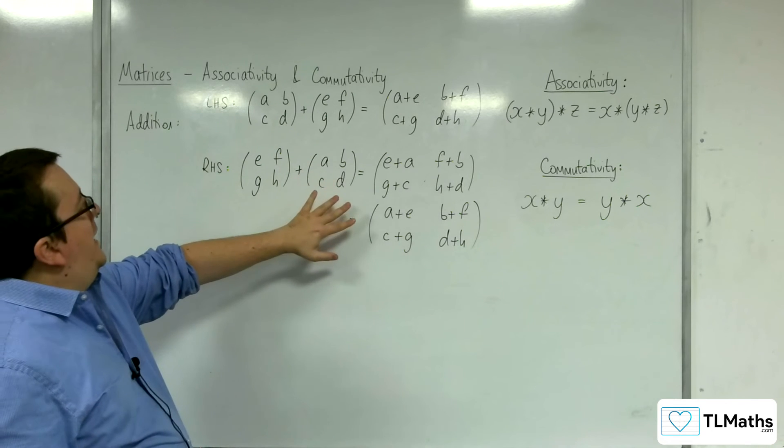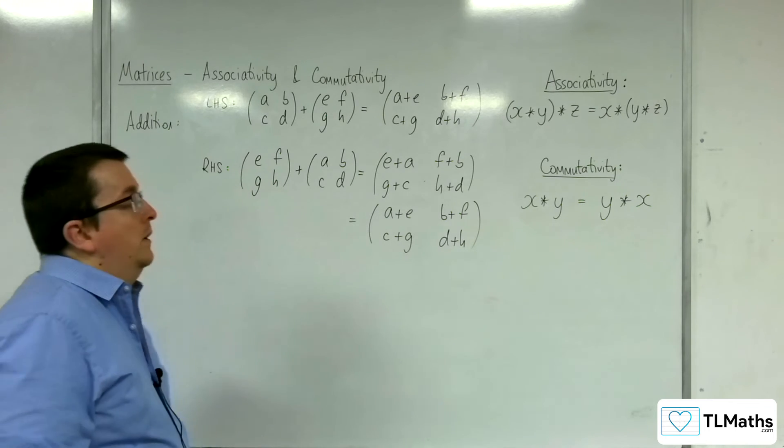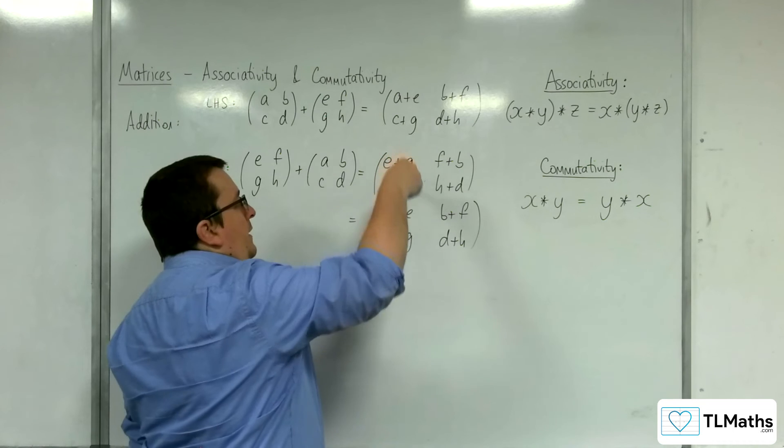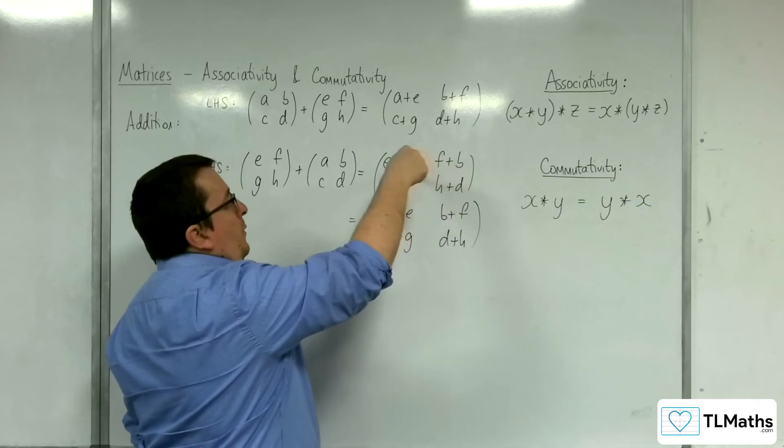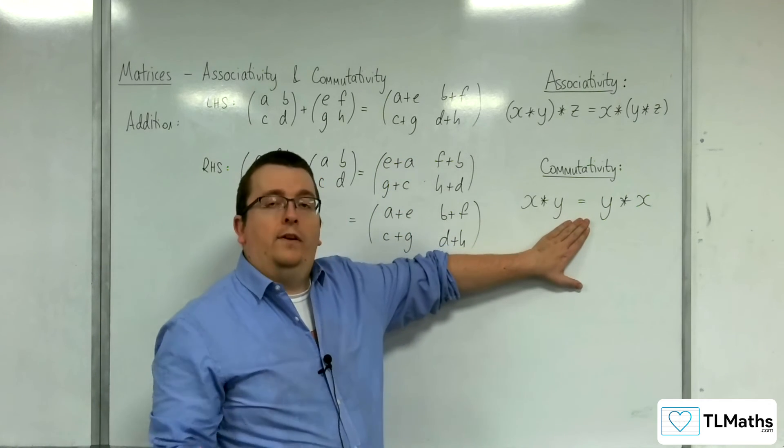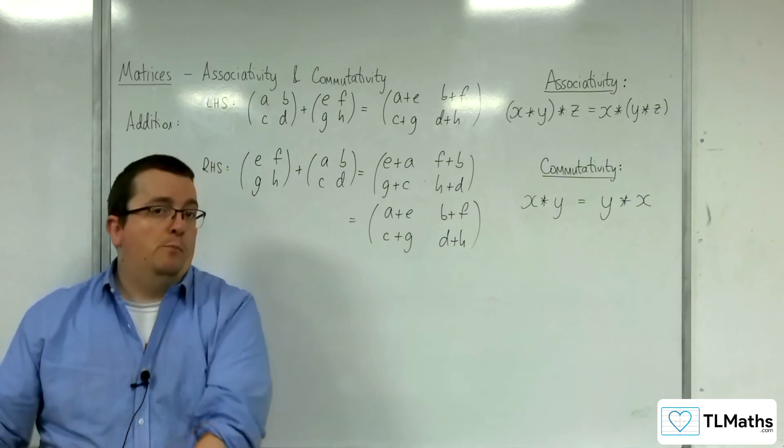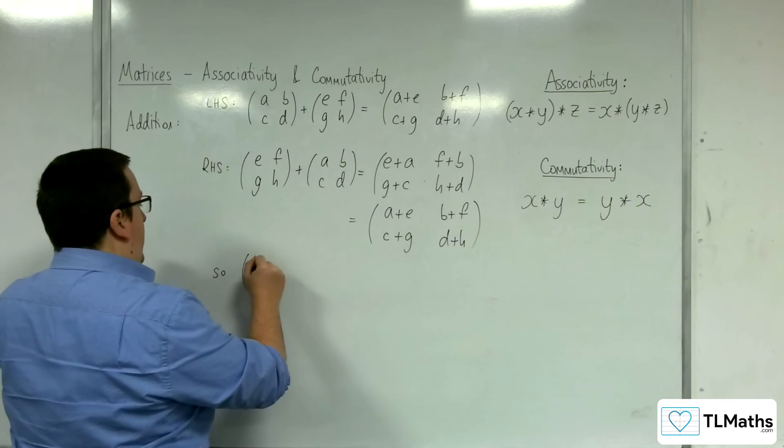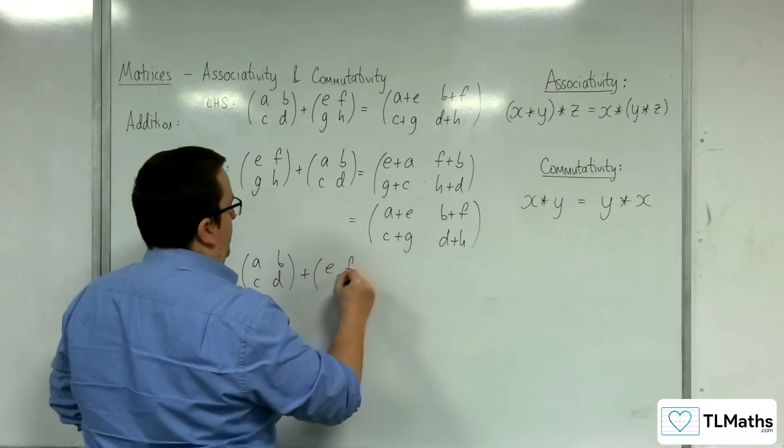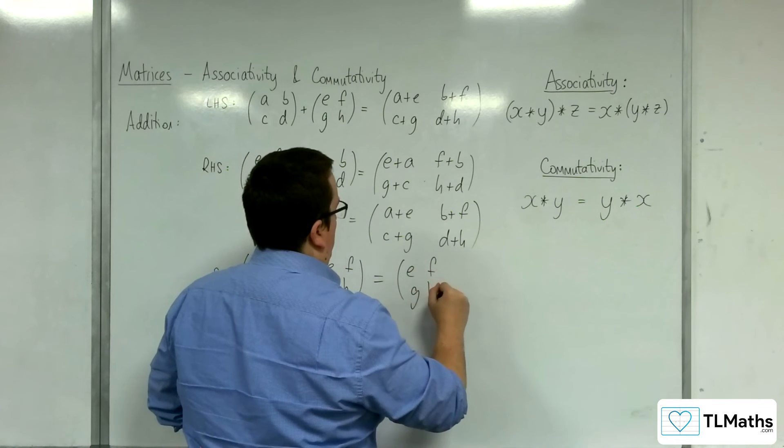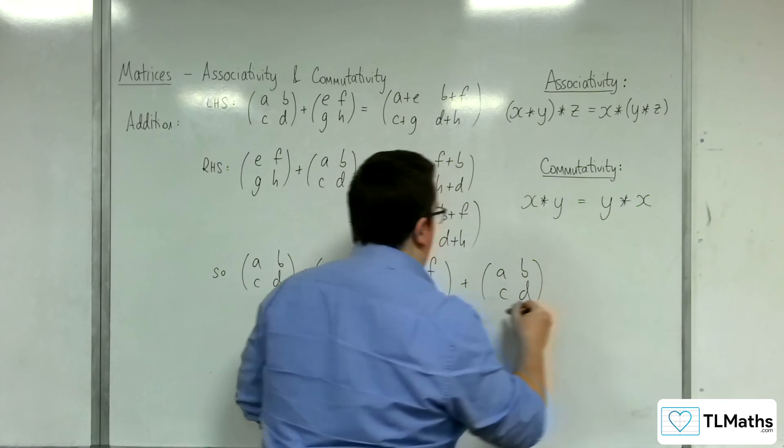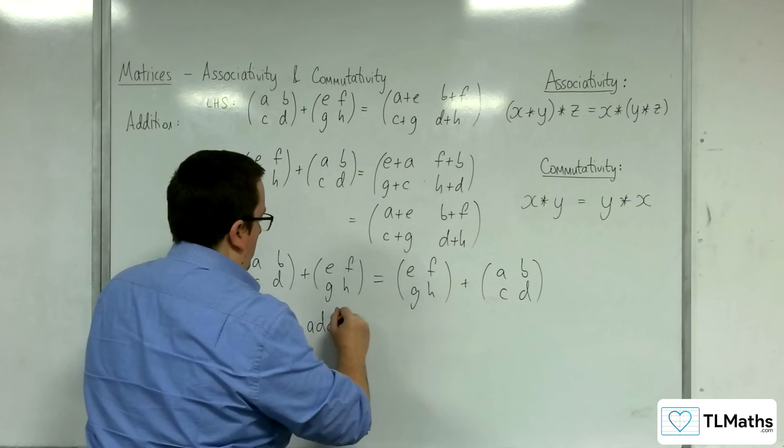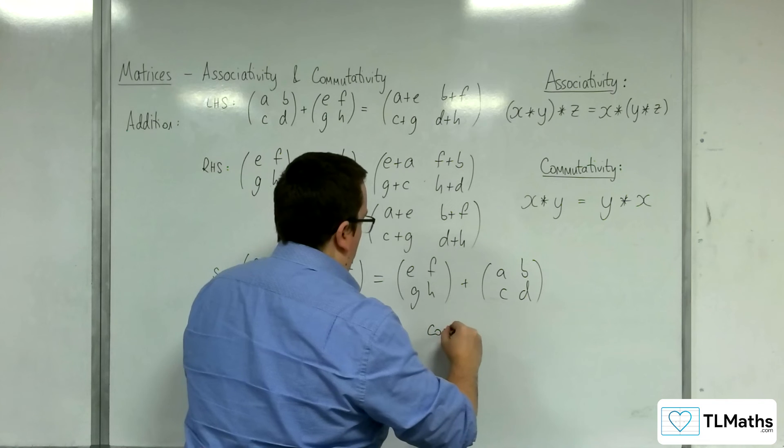Now the reason why I can go from there to there is because we know that real numbers, assuming that a to h here are real numbers, we know that real numbers are commutative under addition, which means that is the same as that. So I know that e+a is equal to a+e because this rule works for real numbers. That would be a separate proof working behind the scenes that allows me to make that change. Therefore, matrix addition is commutative.